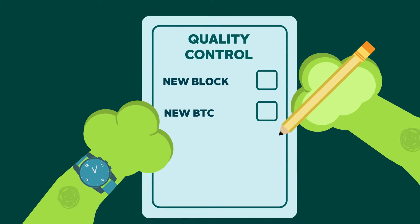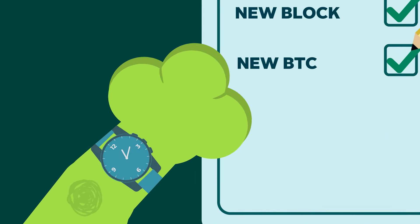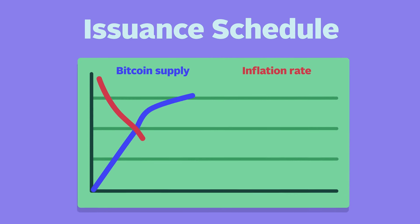The reason the Bitcoin network does this is to ensure that new blocks and new Bitcoin are created roughly every 10 minutes on average in accordance with its programmed issuance schedule.